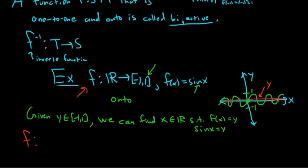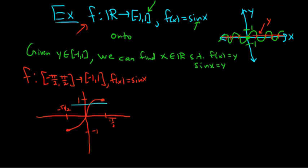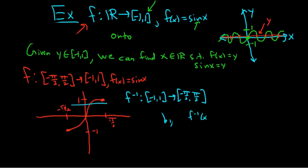What people often do is restrict the function. Instead of the full sine function, they look at f from negative pi over 2 to pi over 2, to negative 1 to 1. We've restricted the domain of the sine function. Now it's one-to-one — it passes the horizontal line test — and it's onto, so it has an inverse function. We define the inverse function from negative 1 to 1 to negative pi over 2 to pi over 2 by f inverse of x equals the arcsine of x.